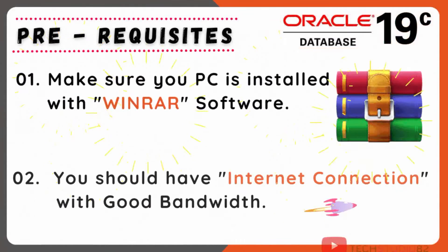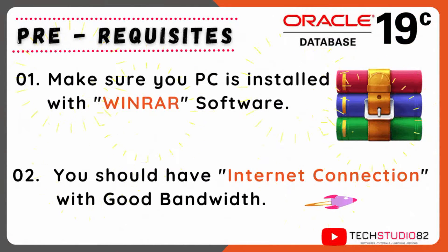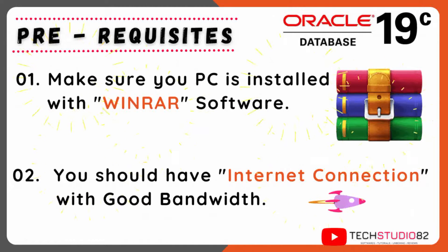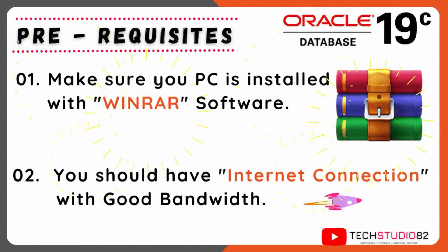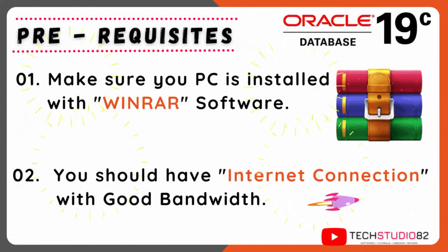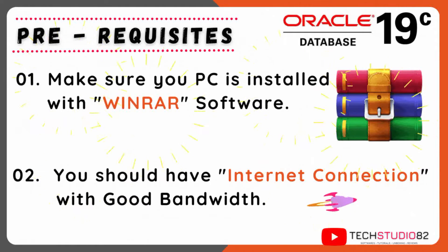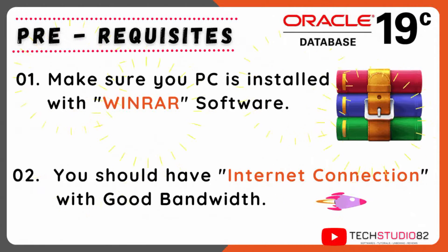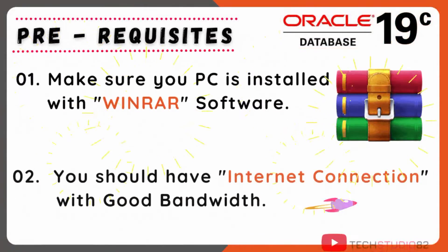Before moving to the first step, there are some prerequisites. Please make sure that WinRAR software is installed on your machine. The Oracle software file which we are going to download will be in .rar format — it will be a zip file. That's why we need WinRAR software so that we can extract the zip file easily. Also make sure that your PC has internet connection with good bandwidth, as we are going to download the Oracle software file directly from the Oracle official website.